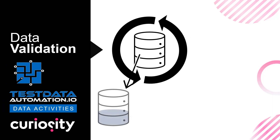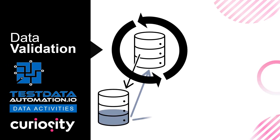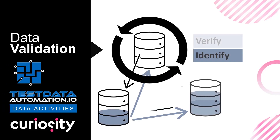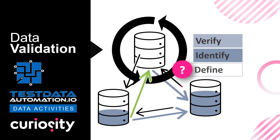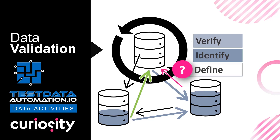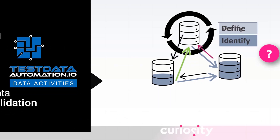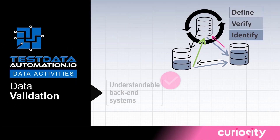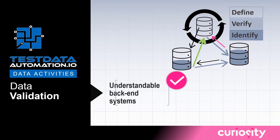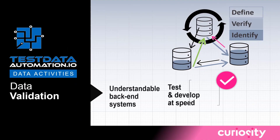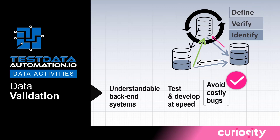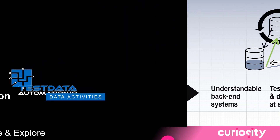Data Validation from Test Data Automation identifies and verifies relationships in your data while defining valid and invalid data combinations. It provides the understanding of complex systems needed to test and develop at speed while avoiding the catastrophic bugs caused when bad data makes it to production.